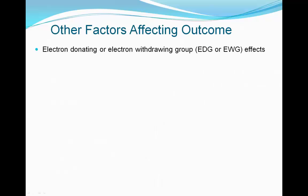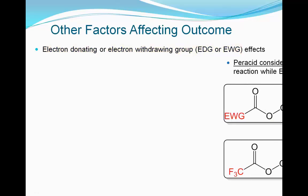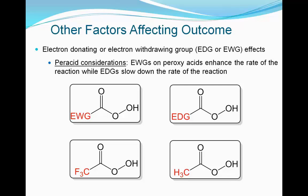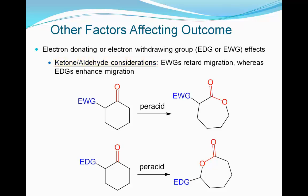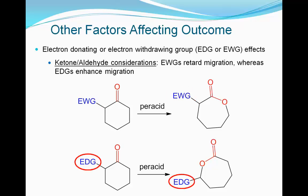Baeyer-Villiger oxidation is sensitive to both electron-donating and electron-withdrawing groups attached to the reagents. In terms of peracid considerations, electron-withdrawing groups on peroxy acids enhance the rate of the reaction, while electron-donating groups slow down the rate of the reaction. In terms of ketone or aldehyde considerations, electron-withdrawing groups retard the migration of the substituents while electron-donating substituents enhance migration of the carbon they are attached to. Thus, the Baeyer-Villiger oxidation of unsymmetrical ketones is regioselective.